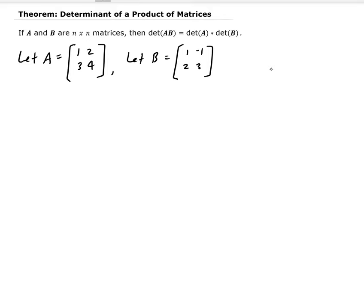To demonstrate this, I'm going to let A be the matrix [1, 2; 3, 4] and let B be equal to [1, -1; 2, 3]. We're going to first find the determinant of each one. The determinant of A is going to be 4 minus 6, which is negative 2.